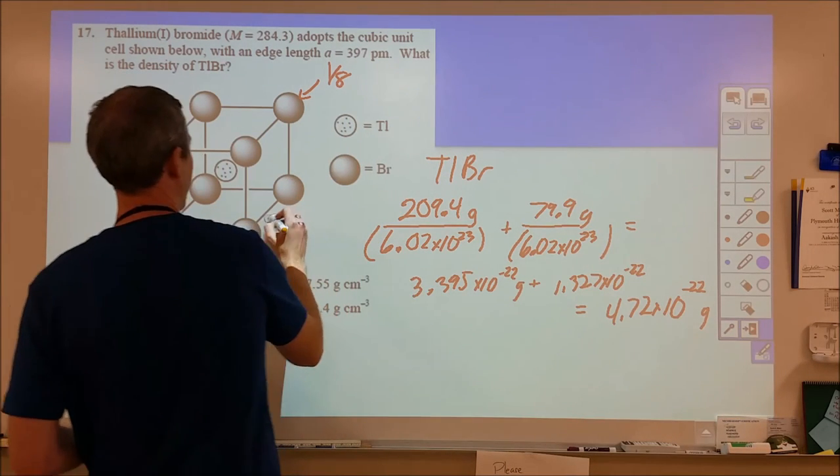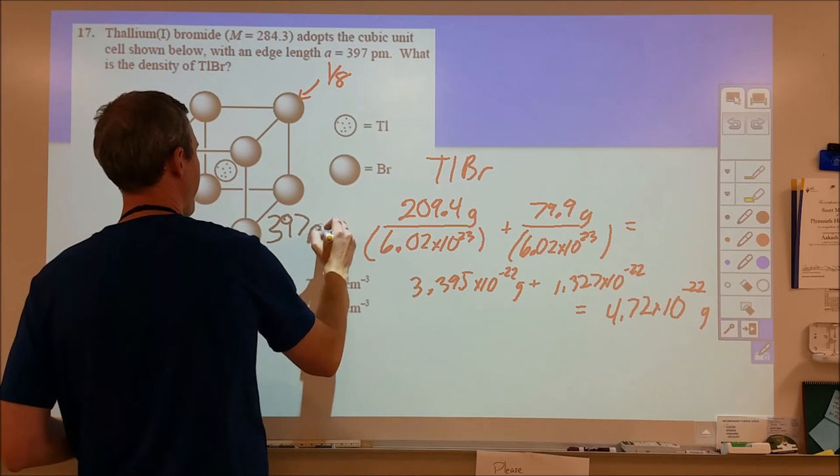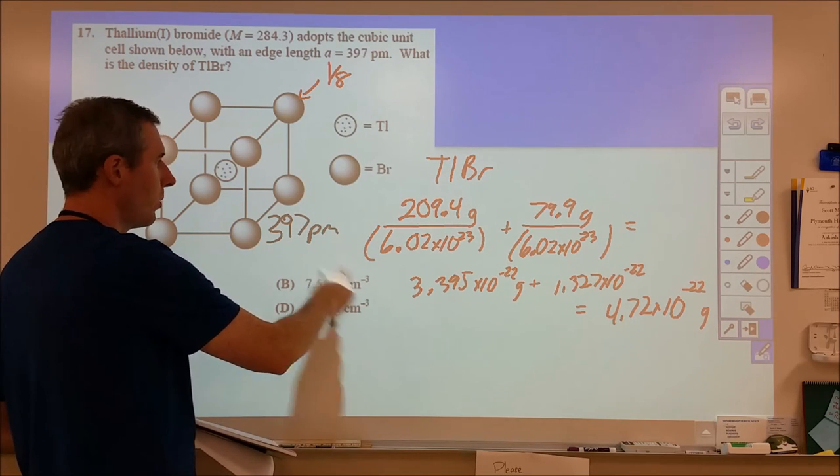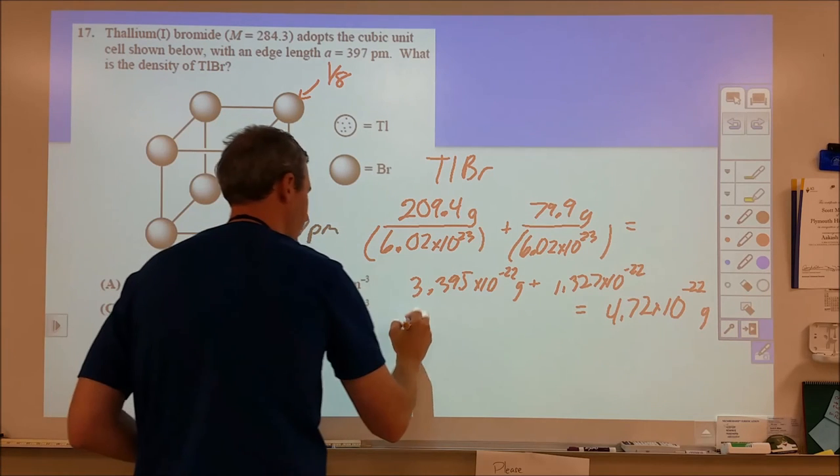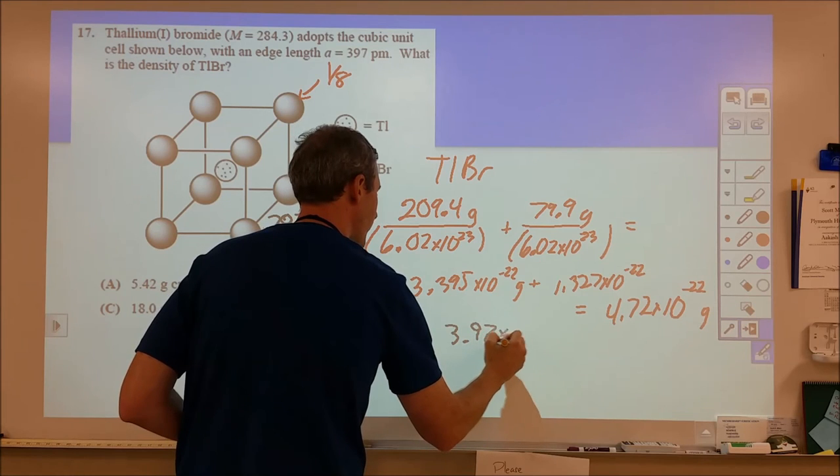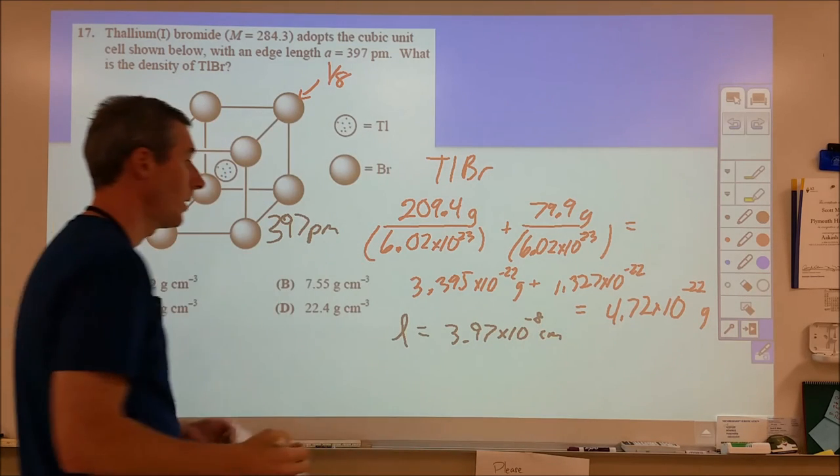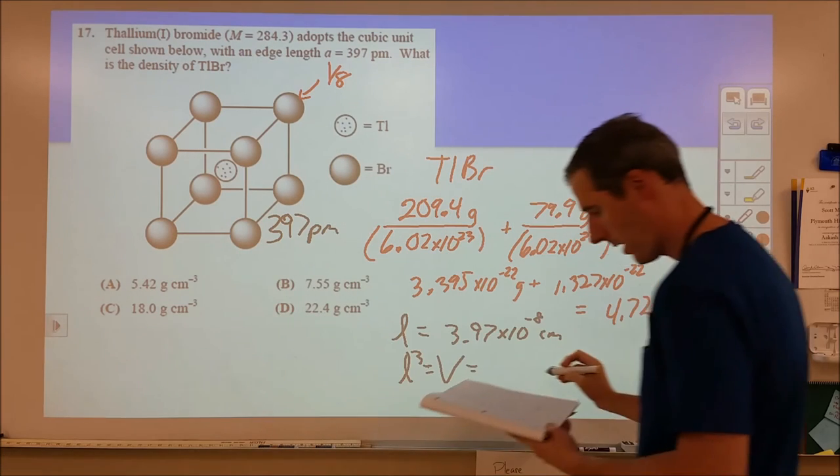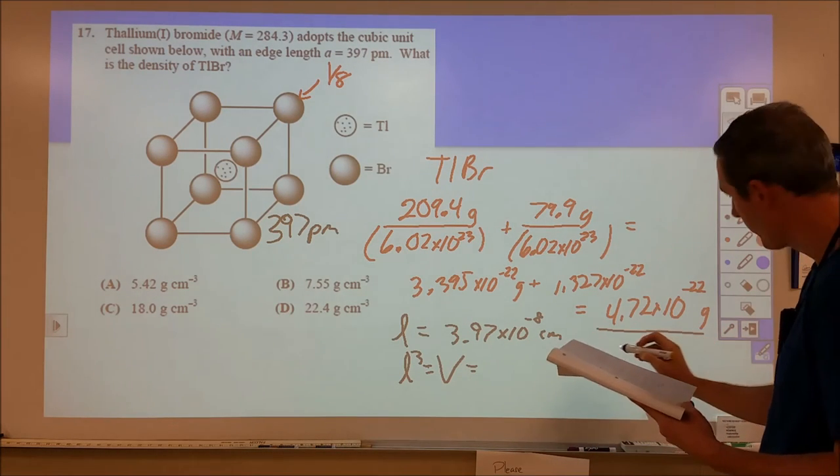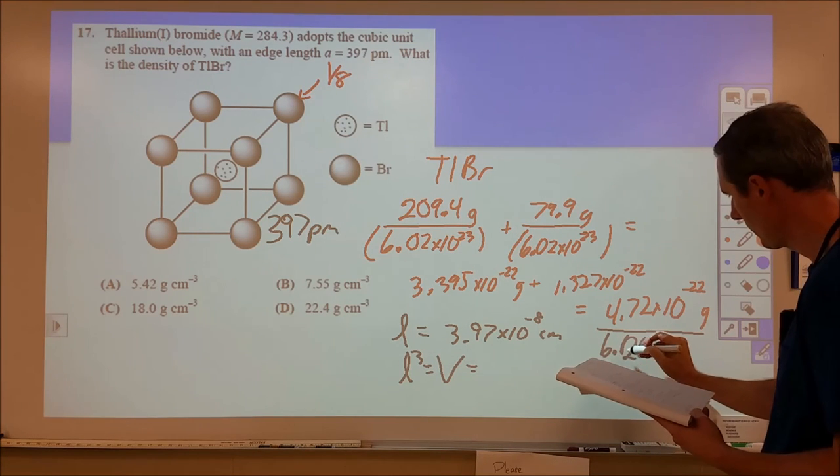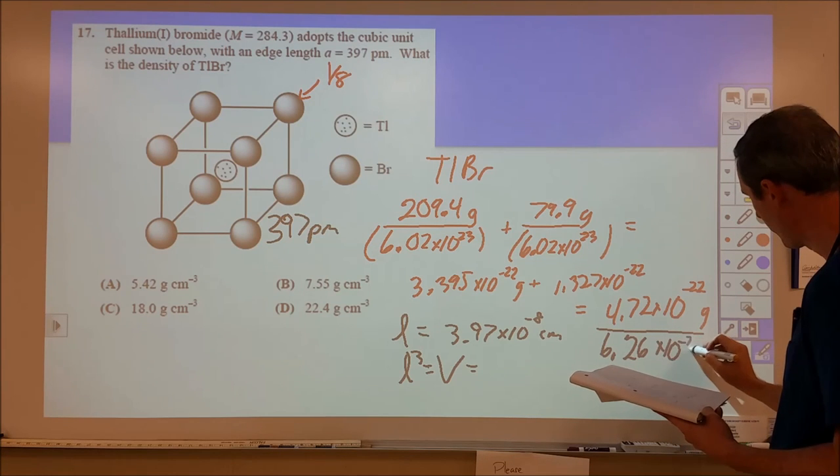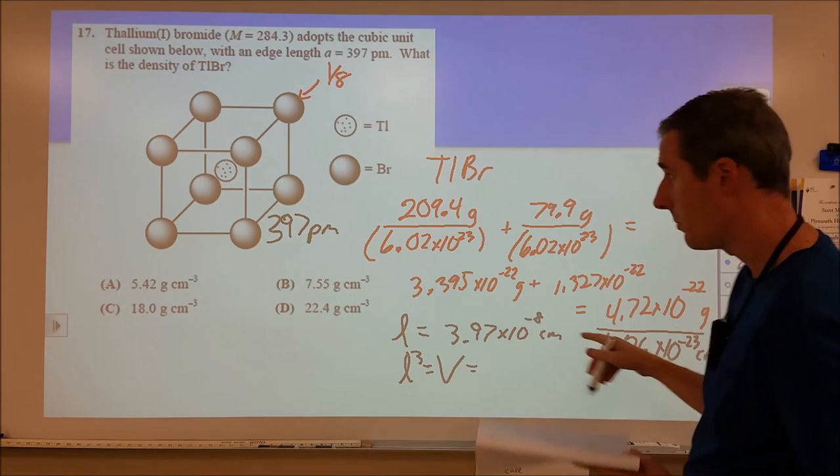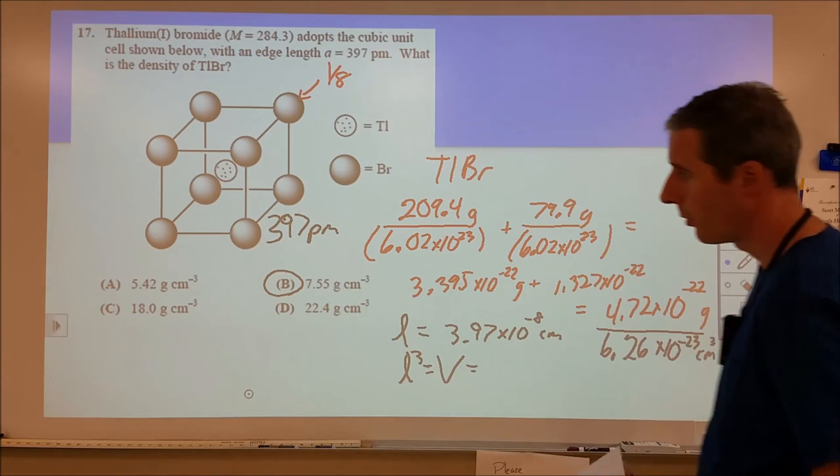Then, we need the volume of the container. So, it tells us the side length is 397 picometers. So, we want to change that into centimeters cubed, or centimeters. So, picometer is 10 to the negative 12th, centimeters 10 to the negative 2. We need to divide this by 10 to the 10th. So, our side length is going to be 3.97 times 10 to the negative 8 centimeters. Then, from there, we need to cube that to get the volume. And that comes out to be a volume of 6.626 times 10 to the negative 23rd centimeters cubed. So, if we divide this by this, we get our density. And that comes out to be 7.54 grams per centimeter cubed. So, we go with B.